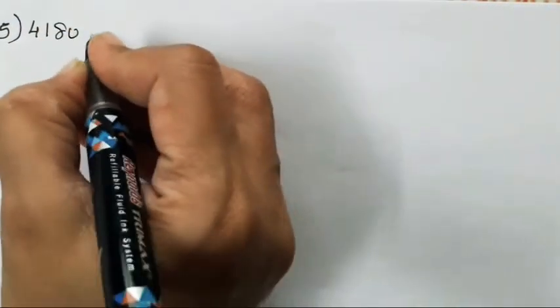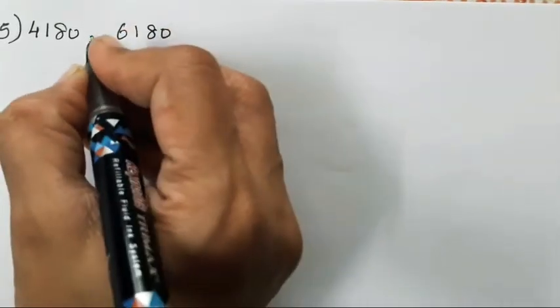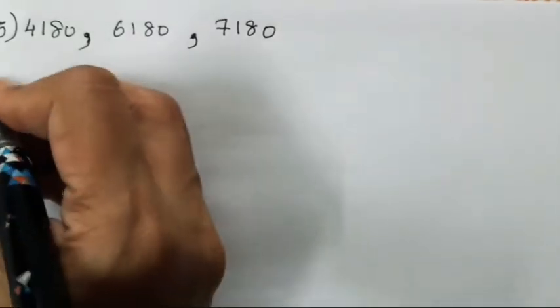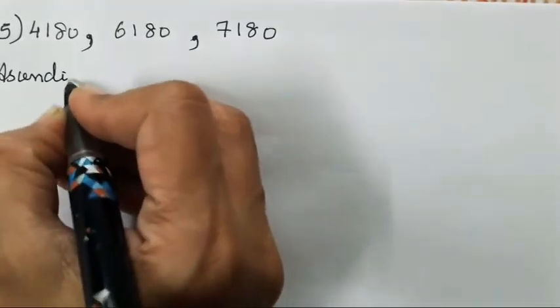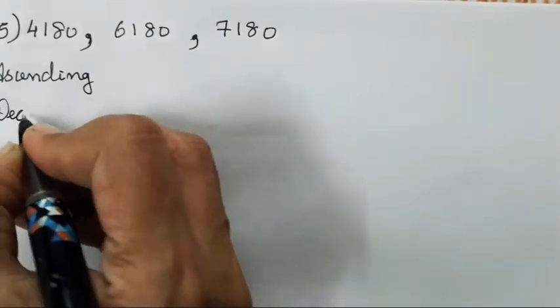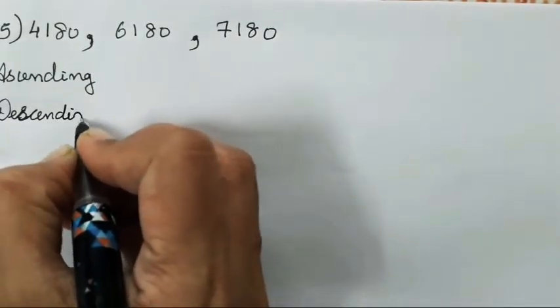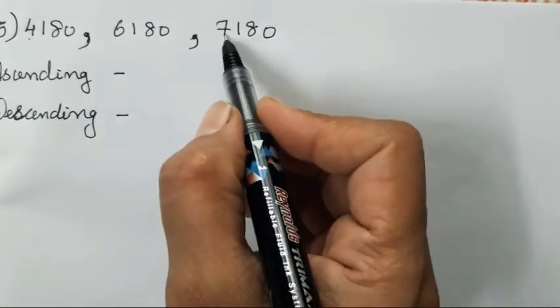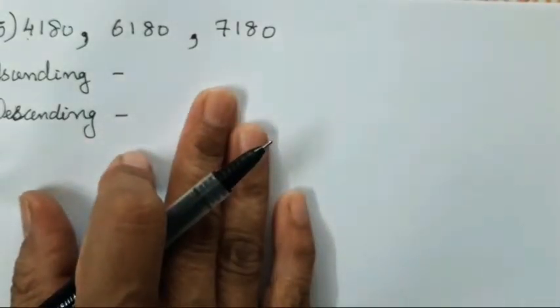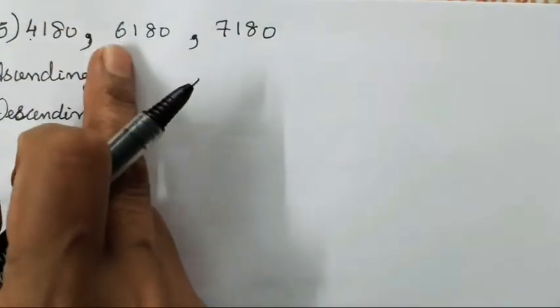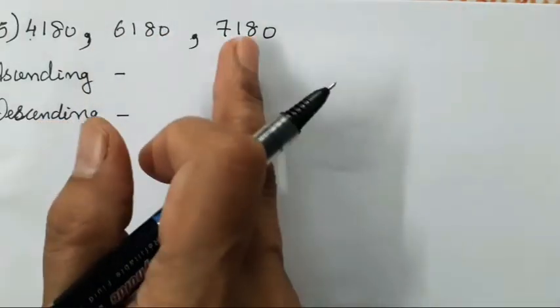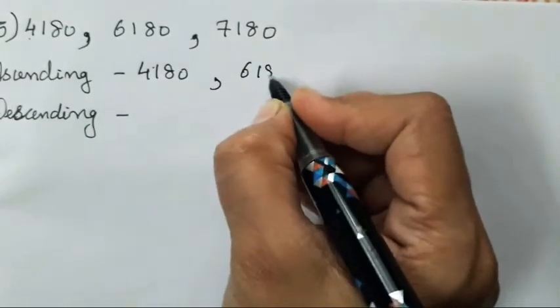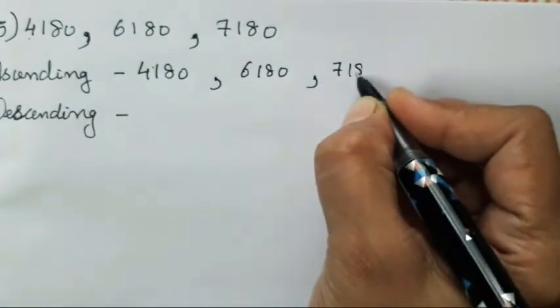Now next is going to be the fifth sum. 4180, 6180, that is 6180, 7180. So first you have to check the first digit, and then move on to the second digit. So before that I will write ascending and descending. So 4, 6, and 7. Which is going to be smaller? Obviously 4 is going to be smaller. Then 6 comes next, then 7 comes next. So it is already in the ascending order. This sum is already in the ascending order.